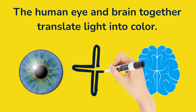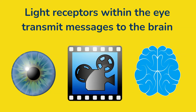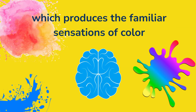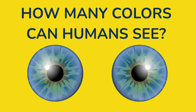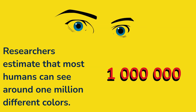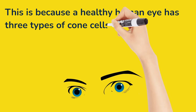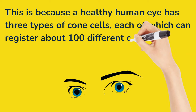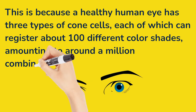The human eye and brain together translate light into color. Light receptors within the eye transmit messages to the brain, which produces the familiar sensations of color. How do we see colors? Researchers estimate that most humans can see around 1 million different colors. This is because a healthy human eye has three types of cone cells, each of which can register about 100 different color shades, amounting to around a million combinations.